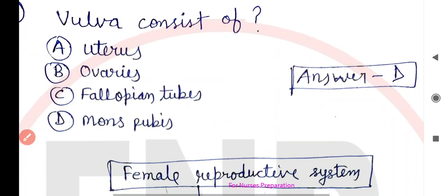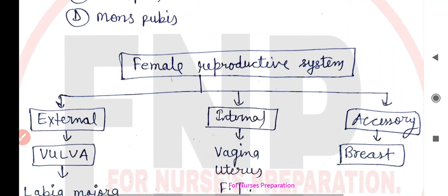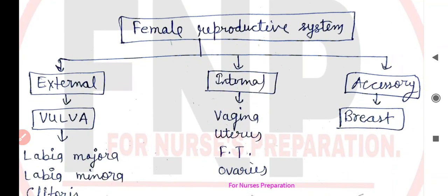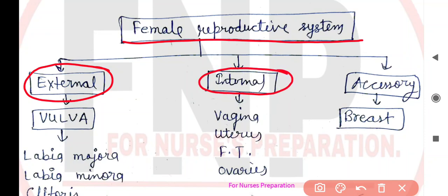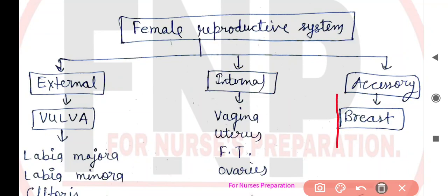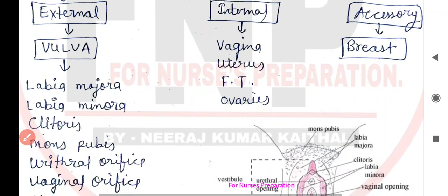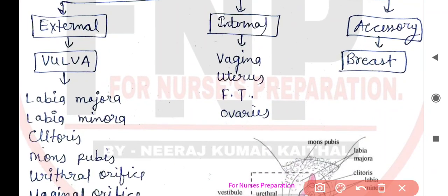Aiye ab jaan lete hain female reproductive system ke baare mein, jisse aapka concept clear ho jaayega. Female reproductive system ko hum teen parts mein classify kar sakte hain: external female reproductive system ya external genitalia, second internal genitalia ya internal female reproductive system, aur last hai accessory organs. Sabse pehle baat karte hain external genital organs, jismein vulva ko include kiya jaata hai.